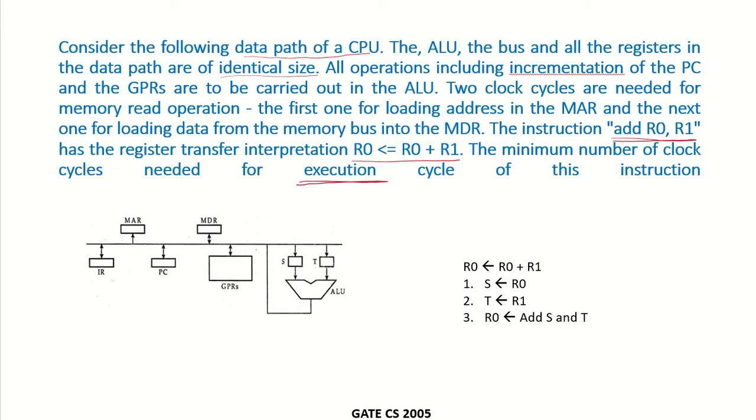Since we have to find out the number of clock cycles only in the execution cycle, we are assuming that the instruction is already available in the processor.